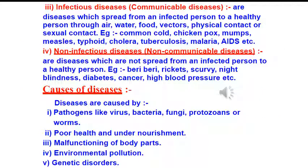Let us discuss in short about infectious diseases, or communicable diseases — diseases which spread from an infected person to a healthy person through air, water, food, vectors, physical contact, or sexual contact. For example, common cold, chickenpox, mumps, measles, typhoid, cholera, tuberculosis, malaria, AIDS — these all are communicable diseases.